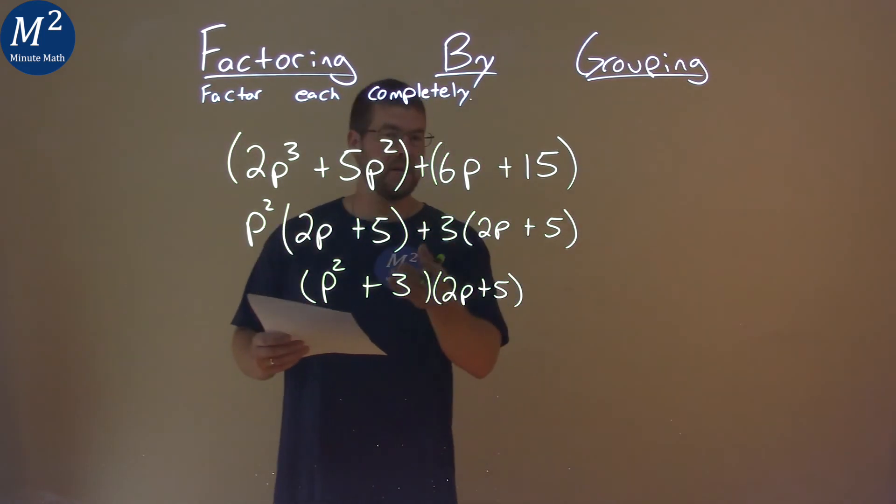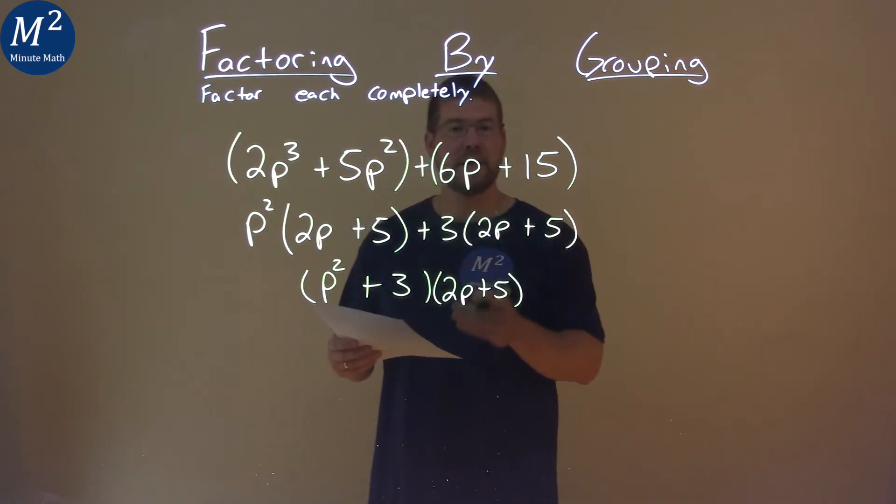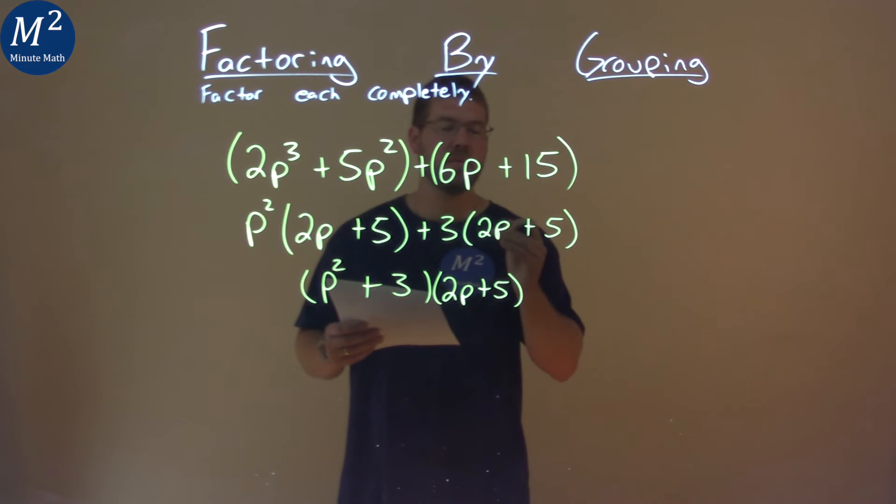And that's actually it. Our final answer here is p squared plus 3 times 2p plus 5.